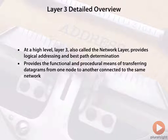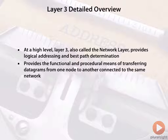Layer three provides the functional capability and the procedural means for transferring packets — or what we also refer to as datagrams — from one node on the network to another. When you think that we can use this logical addressing to route traffic, that tells us that layer three has the ability to route datagrams between addressed nodes within a network, not necessarily the same network.